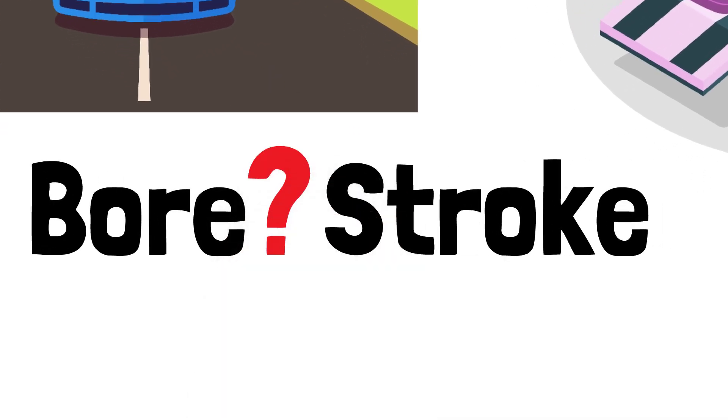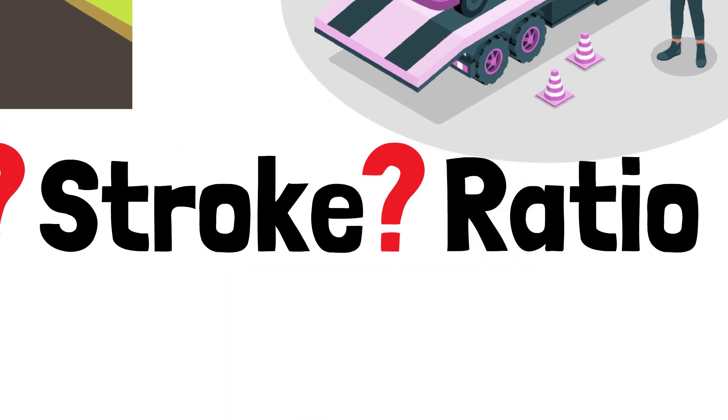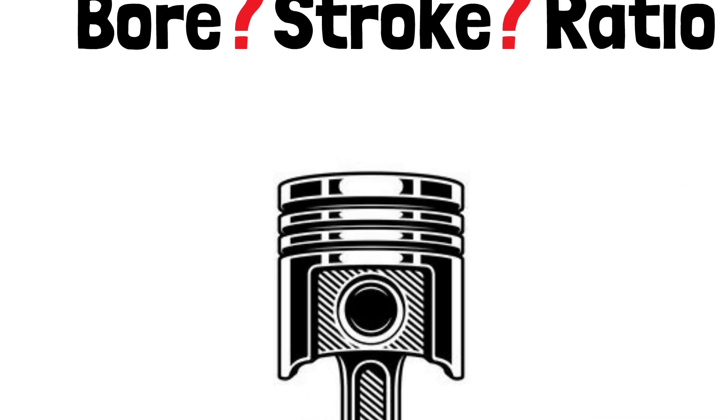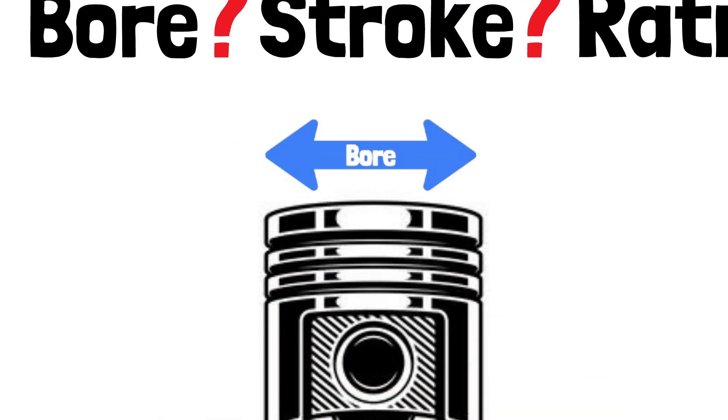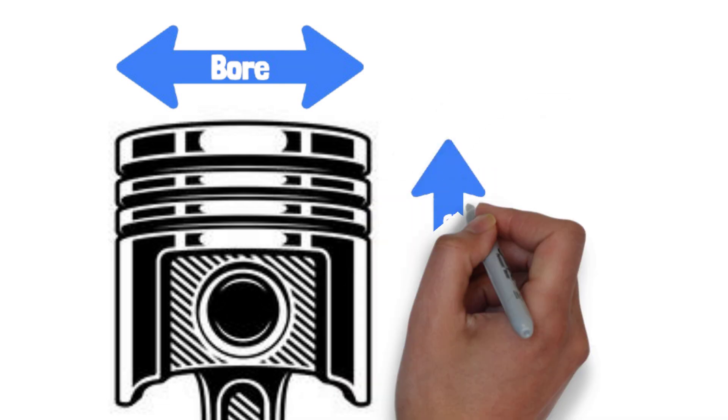First, what exactly is bore and stroke? In an engine, the bore refers to the diameter of the cylinder where the piston moves, while the stroke is how far the piston travels up and down.